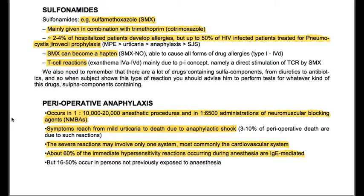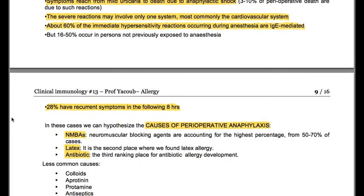Perioperative anaphylaxis occurs in 1 in 10,000–20,000 anesthetic procedures and in 1 in 6,500 administrations of neuromuscular blocking agents. Symptoms range from mild urticaria to death due to anaphylactic shock — 3% of perioperative deaths are due to such reactions. Severe reactions may involve only one system, most commonly the cardiovascular system. About 60% of immediate hypersensitivity reactions occurring during anesthesia are IgE-mediated, but 50% occur in persons not previously exposed to anesthesia; 28% have recurrent symptoms in the following eight years.